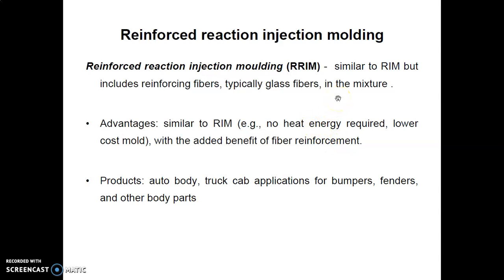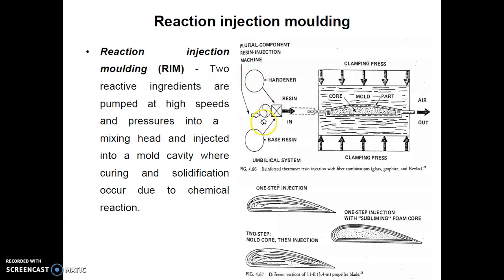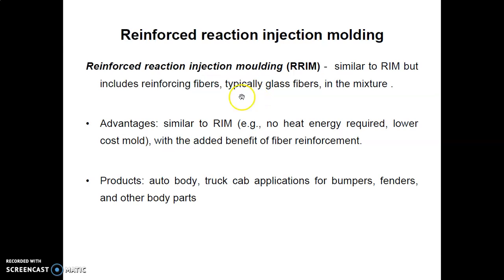Reinforced Reaction Injection Molding (RRIM) is similar to RIM, but it includes reinforcing fibers — typically glass fibers — in the mixture. The previous RIM uses only resin and hardener, whereas RRIM adds glass fiber. An advantage is that, similar to RIM, no heat energy is required and mold cost is low, with the added benefit of fiber-reinforced products for auto body, truck cab, bumpers, and other car body parts.